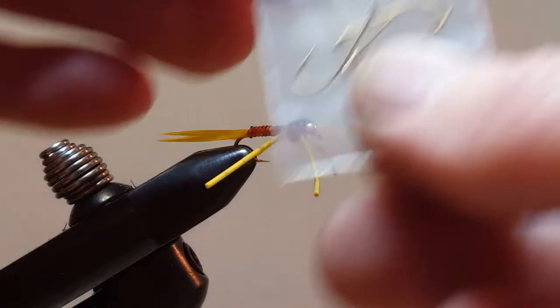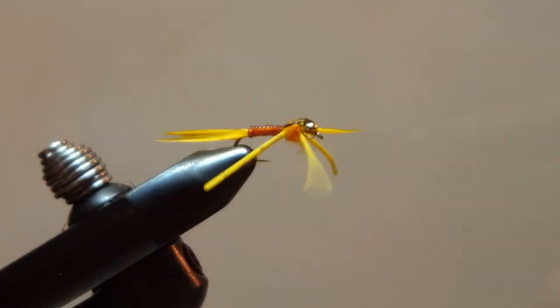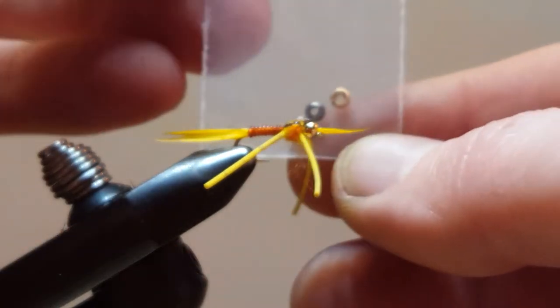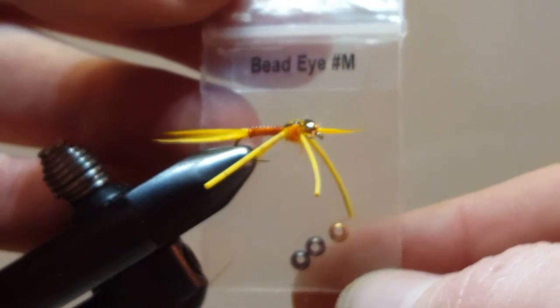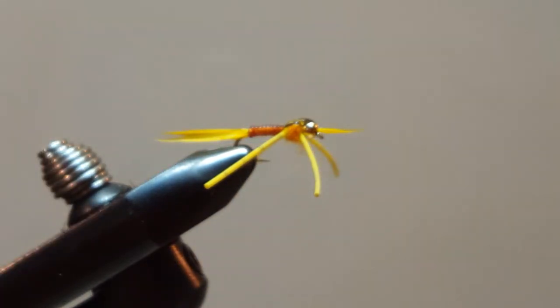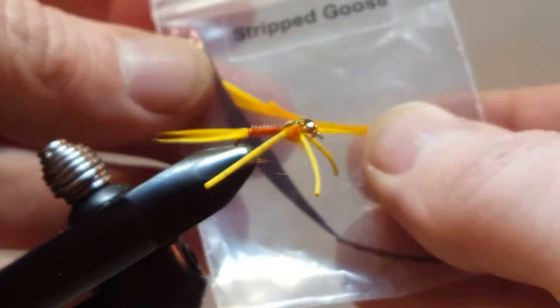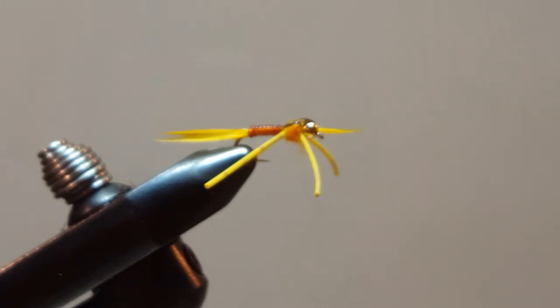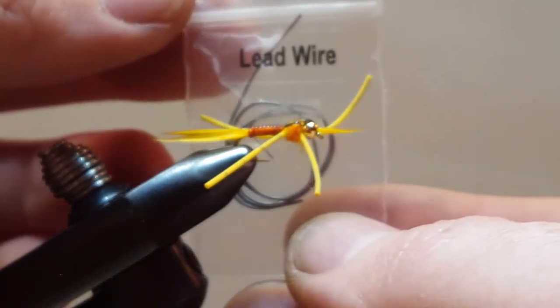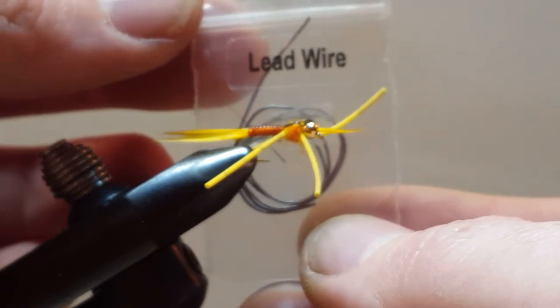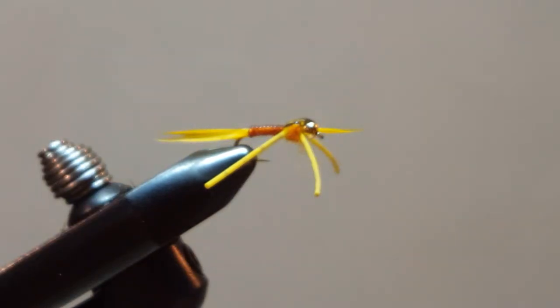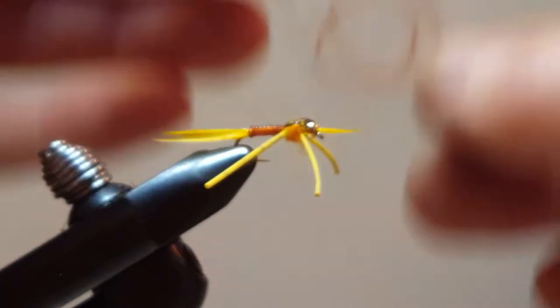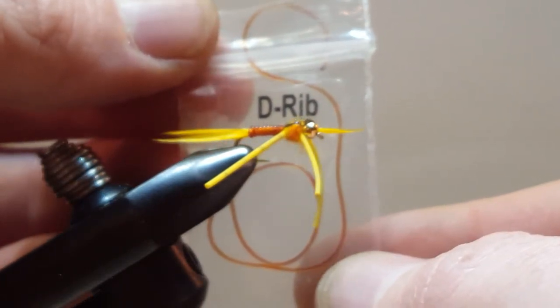Fun little pattern. This is using a size 12 hook. I will be using the gold medium bead eye, the yellow stripped goose biots, a little bit of added weight, some lead wire. I'll be using the de-ribbing, kind of the root beer colored.